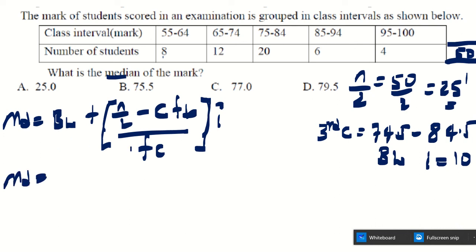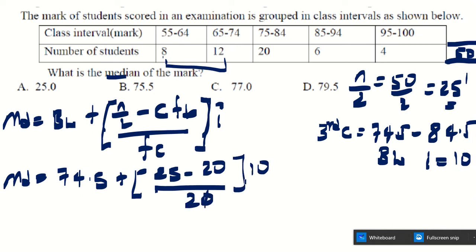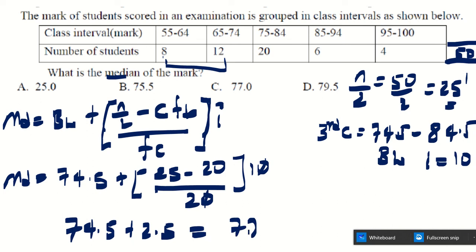Applying the formula: Median = 74.5 + [(25 − 20) / 20] × 10 = 74.5 + (5/20) × 10 = 74.5 + 2.5 = 77. The median is 77.